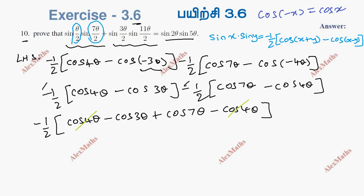The cos 4 theta terms cancel out, leaving us with minus half of cos 7 theta minus cos 3 theta, which equals minus half.